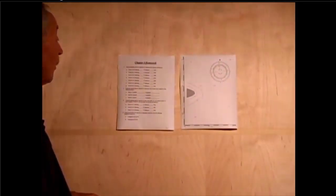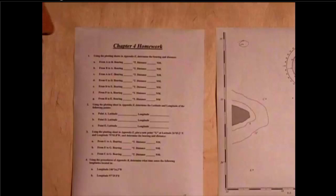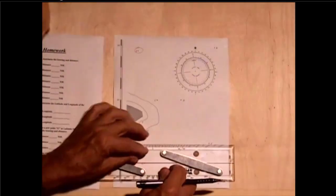Question number 2a asks for the latitude and longitude of point A. So, here's point A, and let's look at the latitude and longitude of it. Well, to get that,